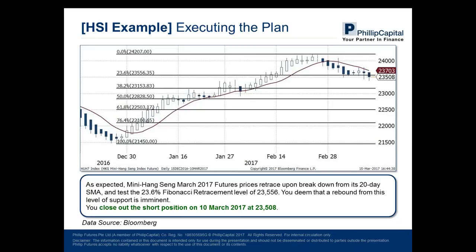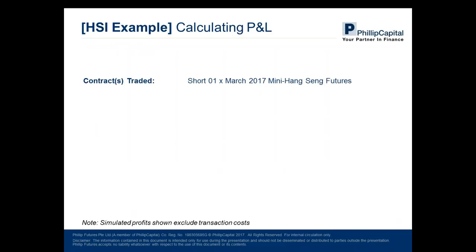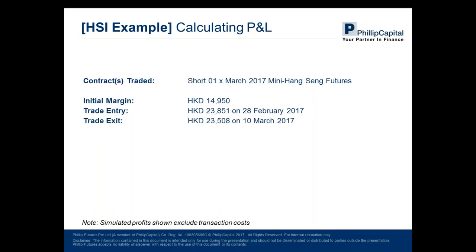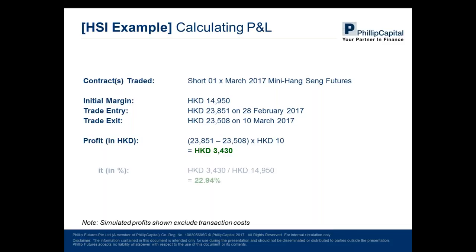How did he calculate his P&L? He traded one March Mini Hang Seng index futures contract going short. His initial margin required was 14,950 Hong Kong dollars. His entry was 23,851 and he exited at 23,508. To calculate P&L on a short position: entry price minus exit price, multiplied by the multiplier, gives 3,430 Hong Kong dollars. In terms of percentage profits, he made a 23% profit in just 10 calendar days with a very small move in the index. This highlights the advantages of futures: you can short, profits are amplified — and so are losses.